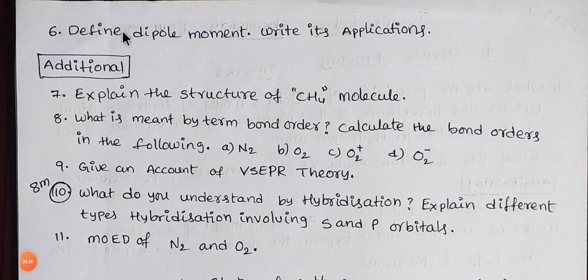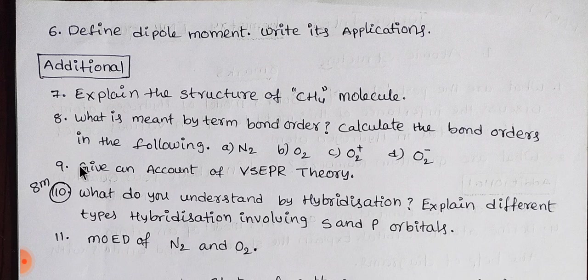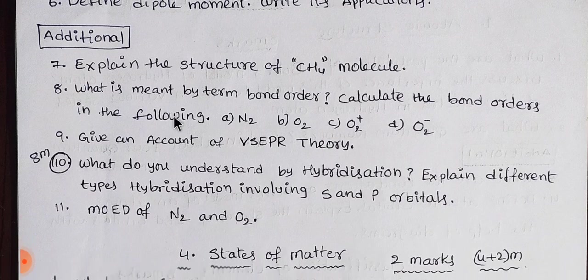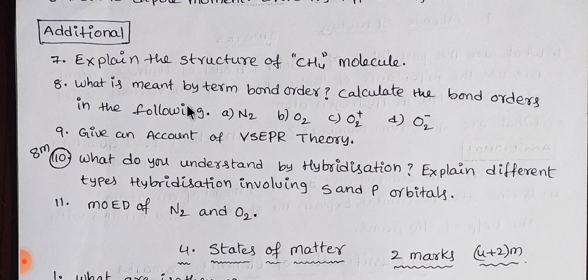Next one: define dipole moment and write its applications. Next, we complete additional short answer questions. The fifth one is sp3 hybridization example and CH4 molecule structure. Next, what is meant by bond order? Calculate bond order for the following: molecules A, B, C, D as per molecular orbital theory.